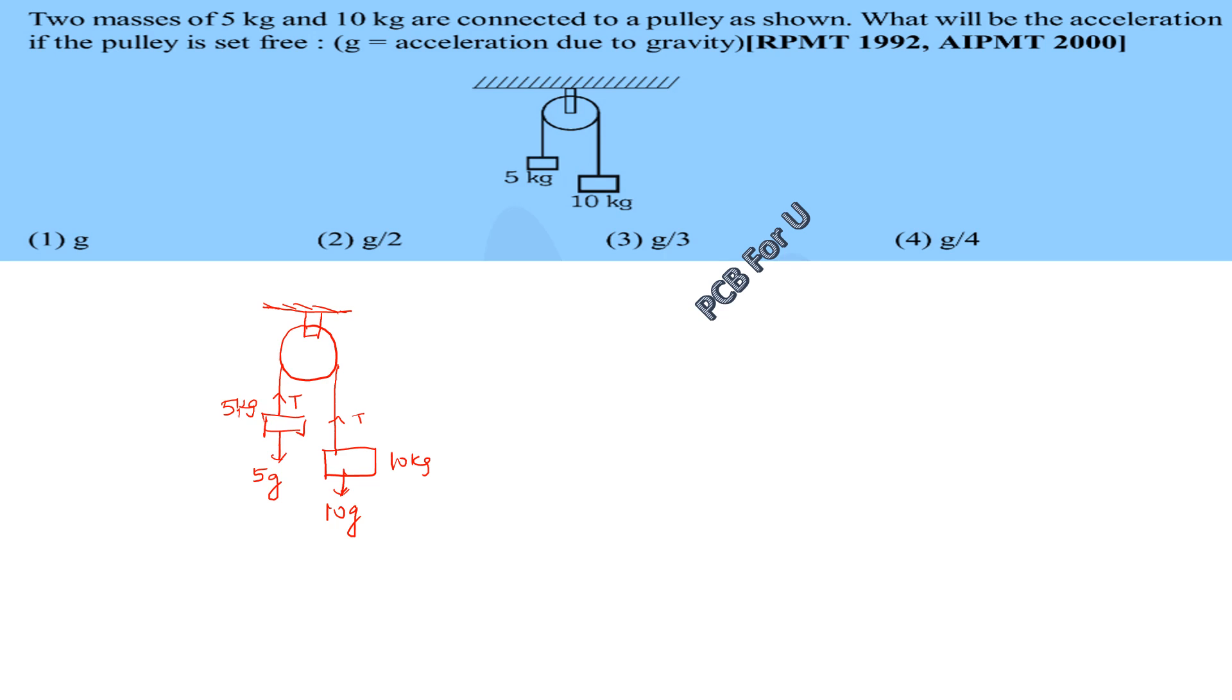Now for this one, we have 10g. We have downward force, so 10g minus T equal to mass times acceleration. So 10 times a. This is the direction of motion.